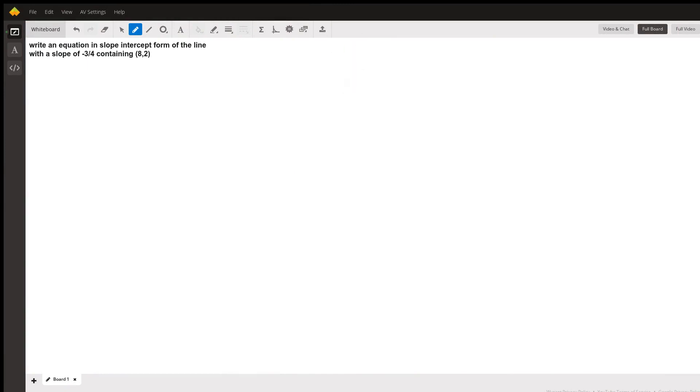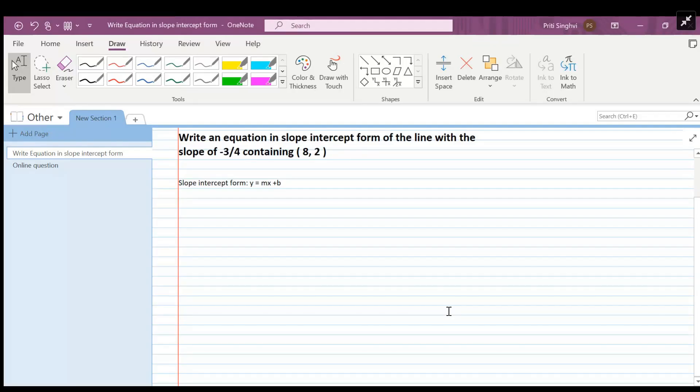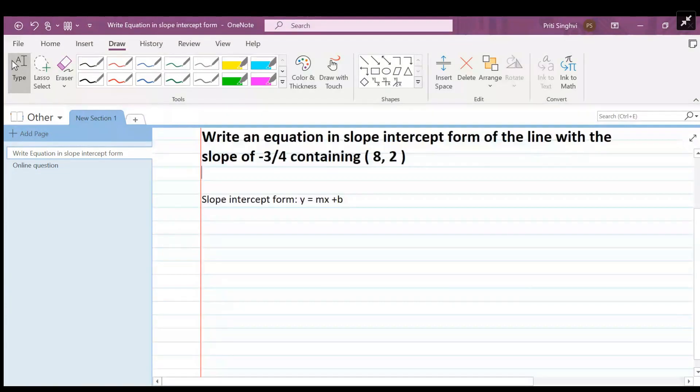In this video we're going to learn how to write an equation in slope-intercept form given the slope and a point. In order to write an equation, first you have to know what slope-intercept form is, which is y equals mx plus b, where m is your slope and b is your y-intercept.